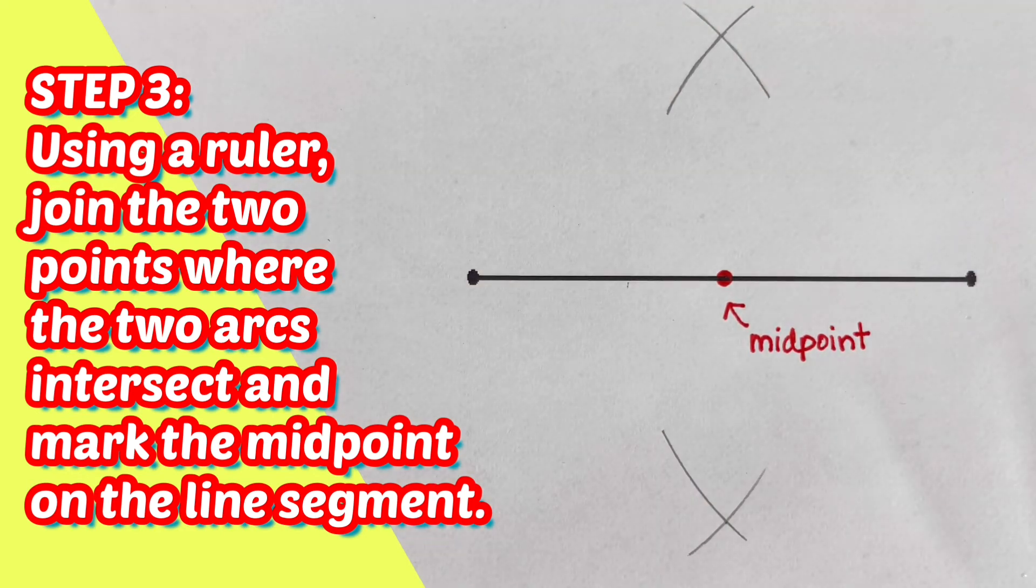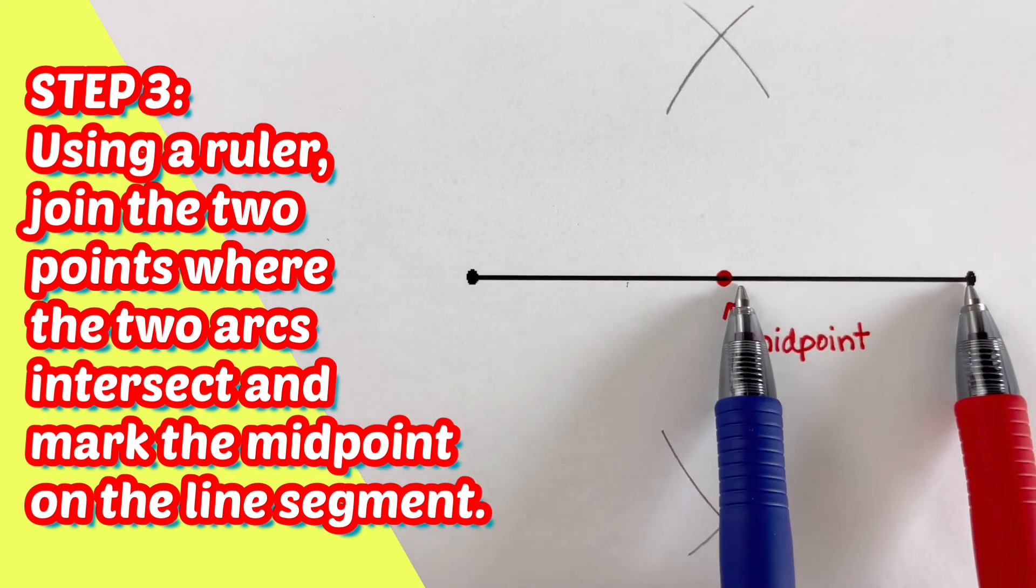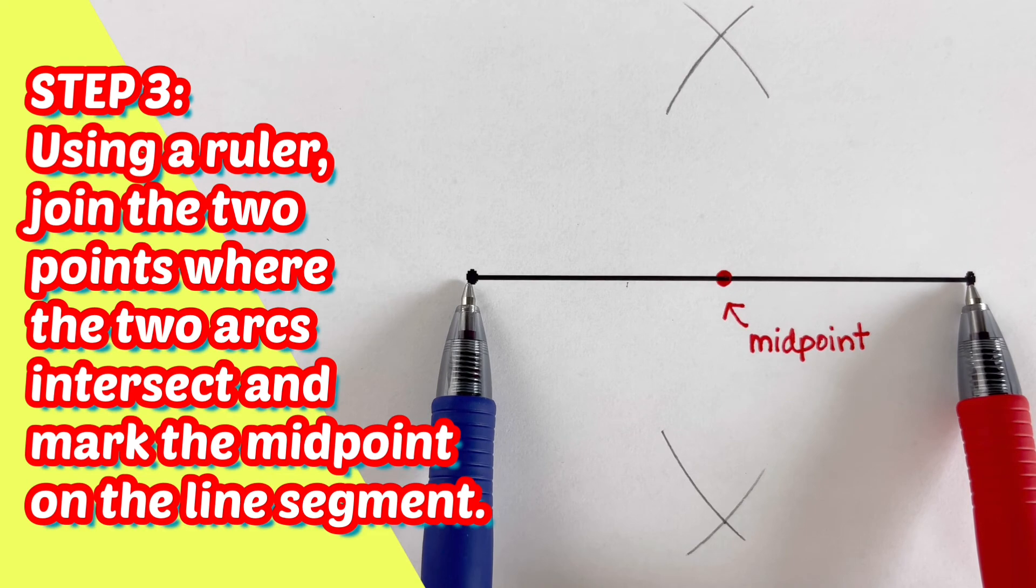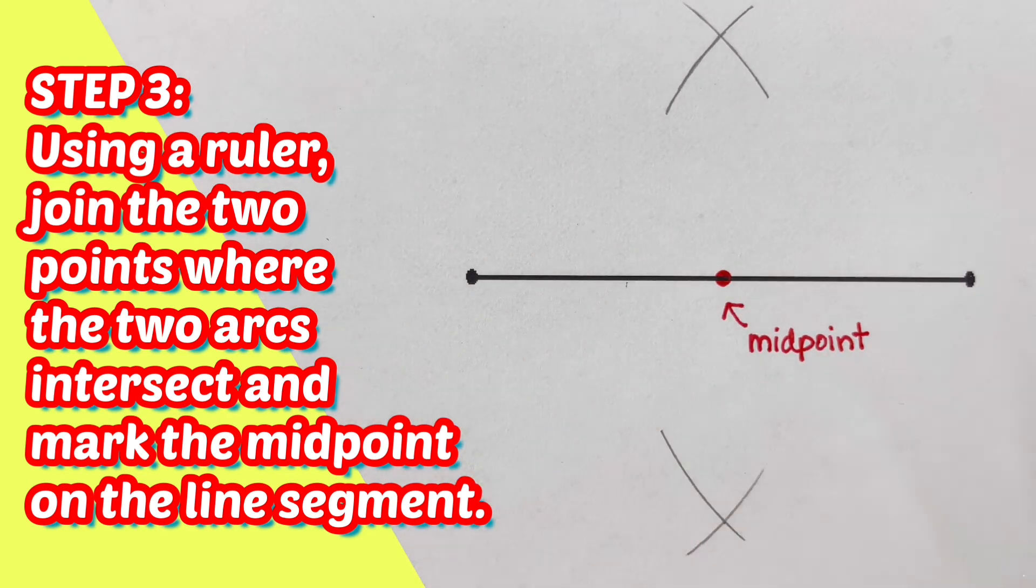This tells us that this line segment, the first segment that we have here is equal to the other segment, which means that this whole line segment right here was cut into two equal pieces by this midpoint.